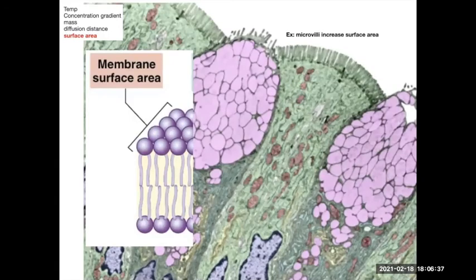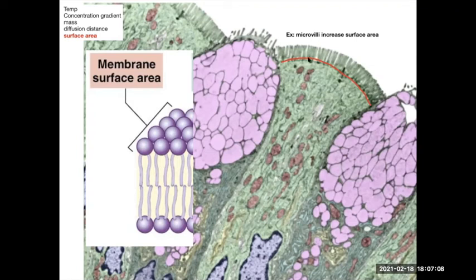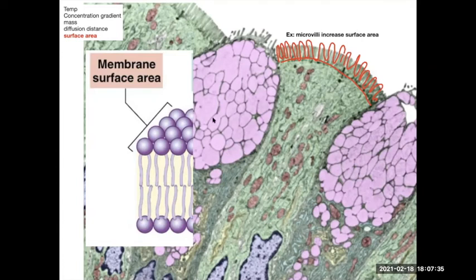Surface area is another factor in diffusion rate. Simple columnar epithelial cells, like the ones we looked at earlier, have microvilli on their apical surface. Without microvilli, you'd have a limited surface area for absorption of digested particles. With microvilli, the surface area increases dramatically — maybe a thousandfold — which greatly increases the rate of diffusion and transport of substances into the cell.